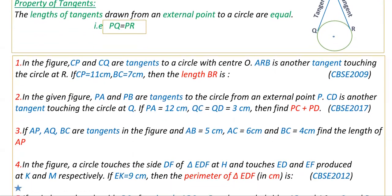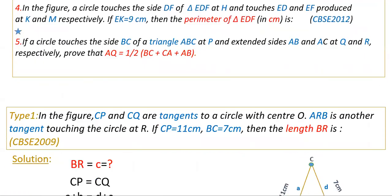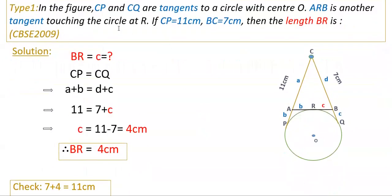We are discussing different types of problems based on the property of tangents, including problems from previous board exams. The first one is Type 1: In the figure, CP and CQ are tangents to a circle with center O. ARB is another tangent touching the circle at R. If CP is equal to 11 centimeters and BC is equal to 7 centimeters, then find the length BR.